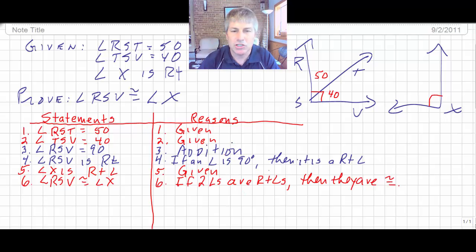So I use that particular theorem. Some new things here. Addition is new to you. This is just the definition of a right angle. If an angle is 90 degrees, then it's right. It's our simple definition of a right angle. And then our theorem, if two angles are right angles, then they're congruent. So there is a sample of a two-column proof.